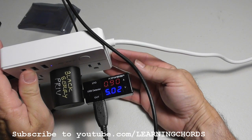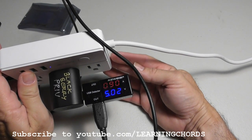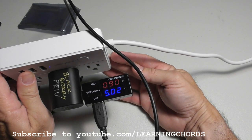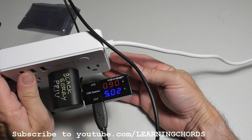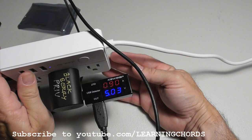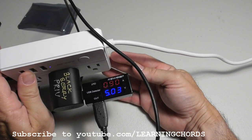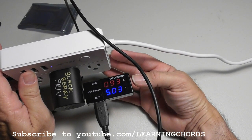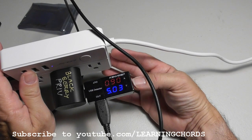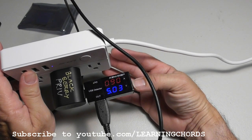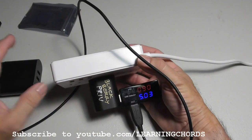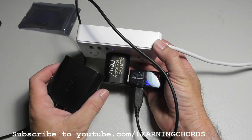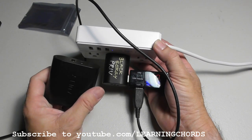Interesting. 5 volts at 0.9 amps. So whereas this is a 1.3 amp charger and the other one is a 3 amp charger, they are both charging at about 0.9 amps, but the original charger is charging at 5 volts.